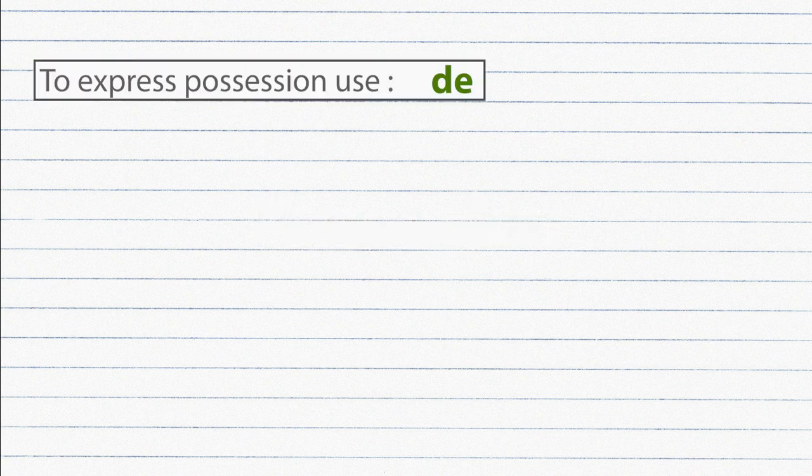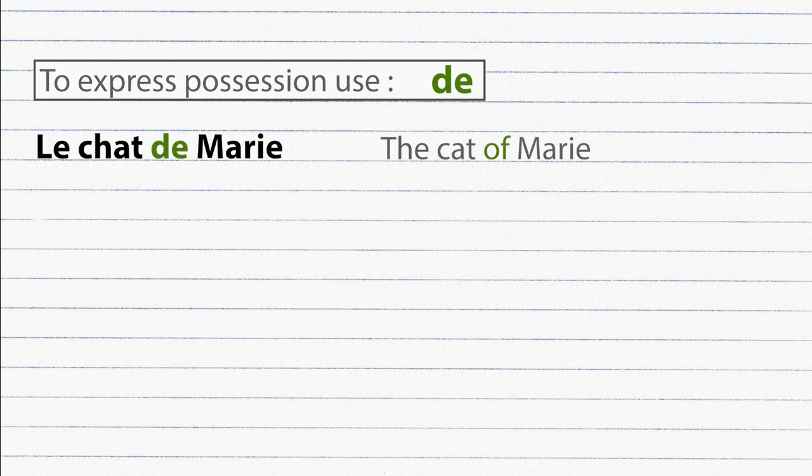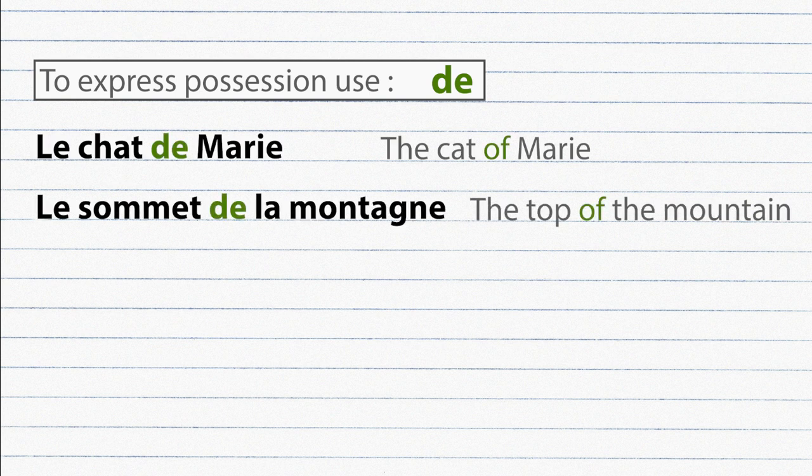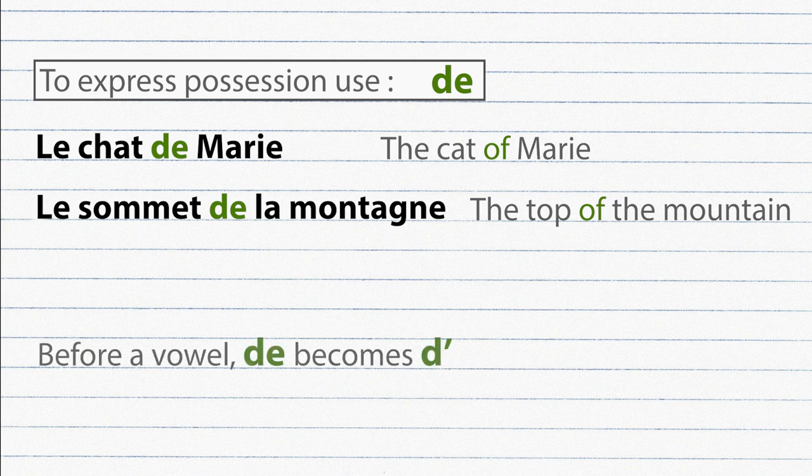Possession. To express possession in French, we use the word de, equivalent to the English word of or apostrophe S. Le chat de Marie. Le sommet de la montagne. Le chien d'Anna.